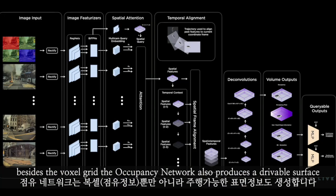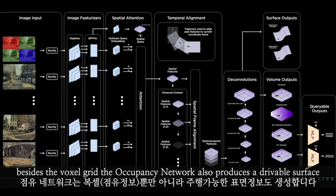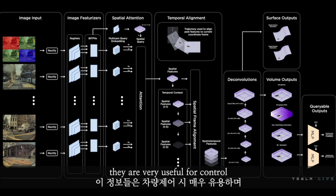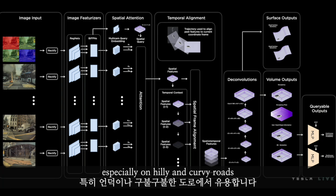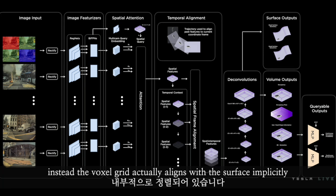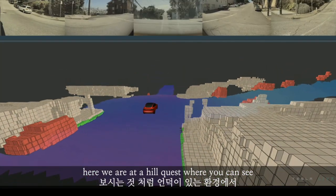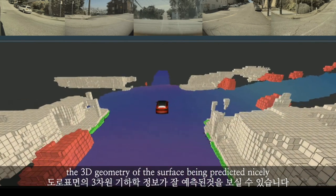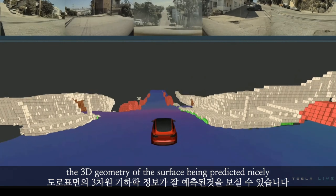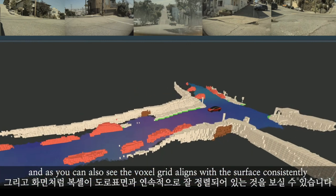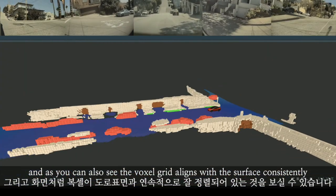Besides the voxel grid, the occupancy network also produces a drivable surface. The drivable surface has both 3D geometry and semantics, which are very useful for control, especially on hilly and curvy roads. The surface and the voxel grid are not predicted independently — instead, the voxel grid actually aligns with the surface implicitly. Here we are at a hill crest where you can see the 3D geometry of the surface being predicted nicely. The planner can use this information to decide when to slow down for the hill crest, and as you can see, the voxel grid aligns with the surface consistently.